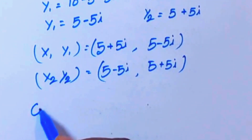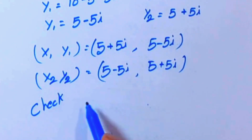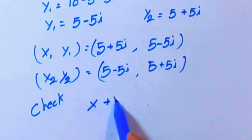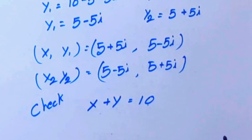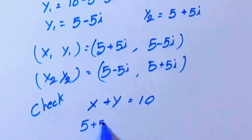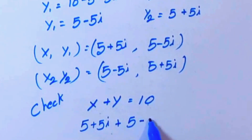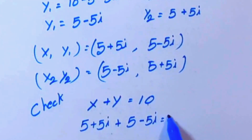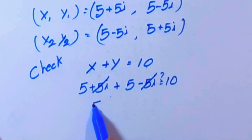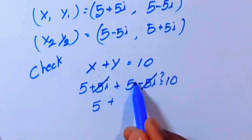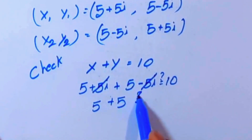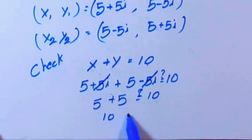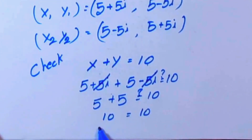Now we are going to verify these solutions with equation 1: x plus y equals 10. Substituting x1 and y1: (5 plus 5i) plus (5 minus 5i) equals 10. The 5i terms cancel, and 5 plus 5 equals 10. So 10 equals 10 — this is verified.